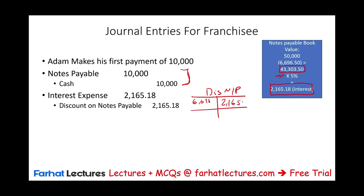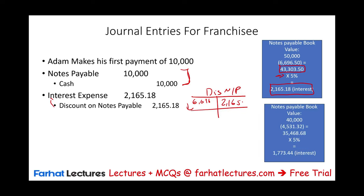After the first payment, the book value of the notes payable is the face value of $40,000 minus the unamortized discount of approximately $4,531, giving a new book value. Then for year two, we multiply by 5% and the interest expense is approximately $1,773.44. When making the year two payment, cash is the same $10,000, and we record interest expense of $1,773.44. Remember, we also have to amortize the intangible asset each year — take the amount divided by five.